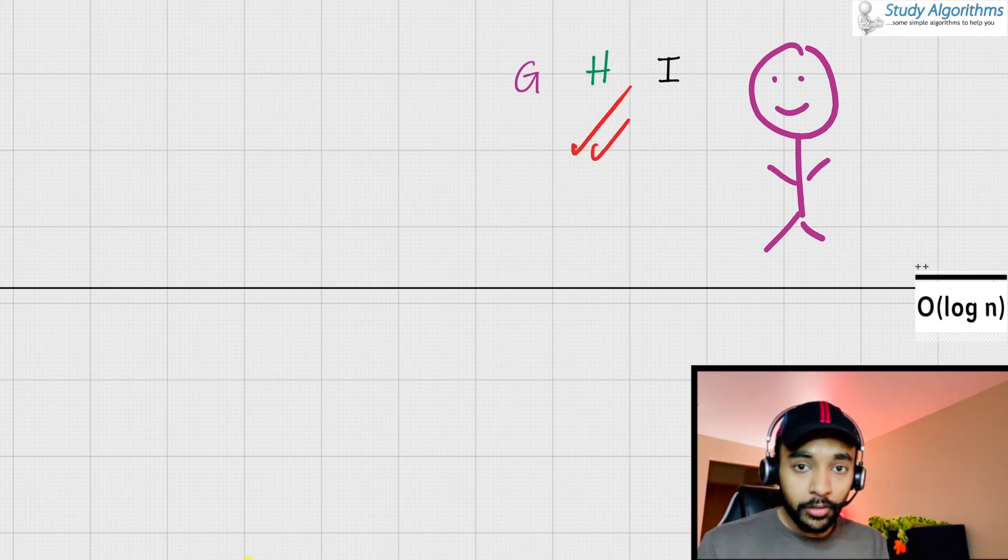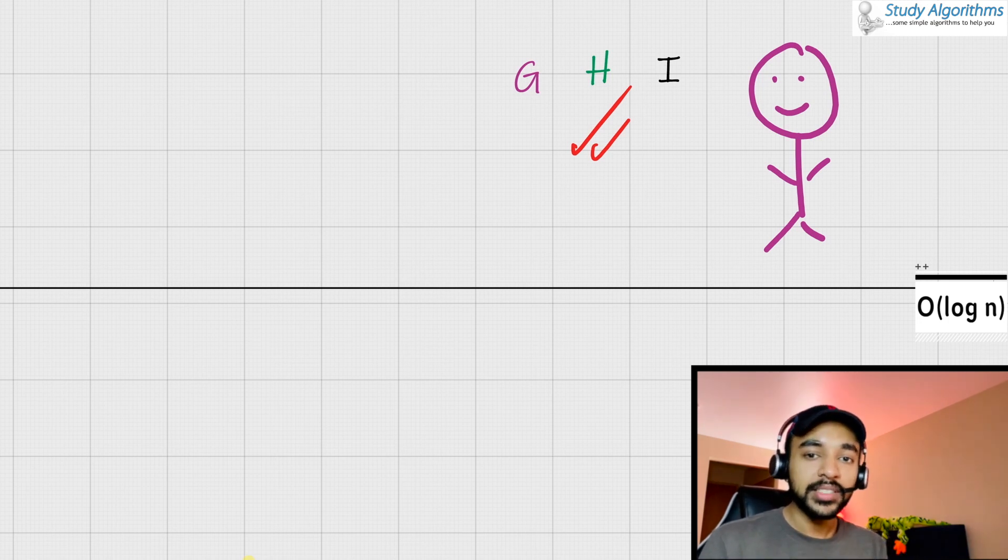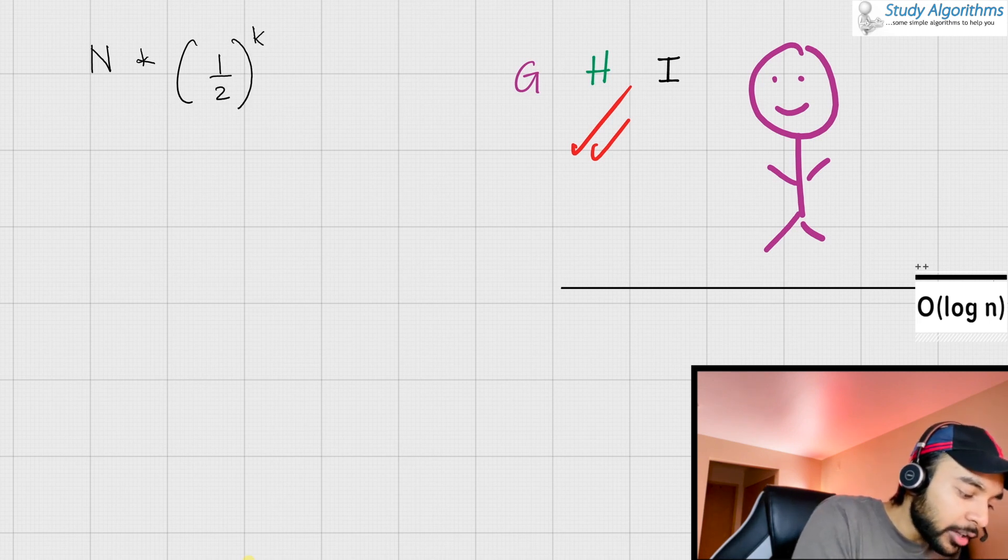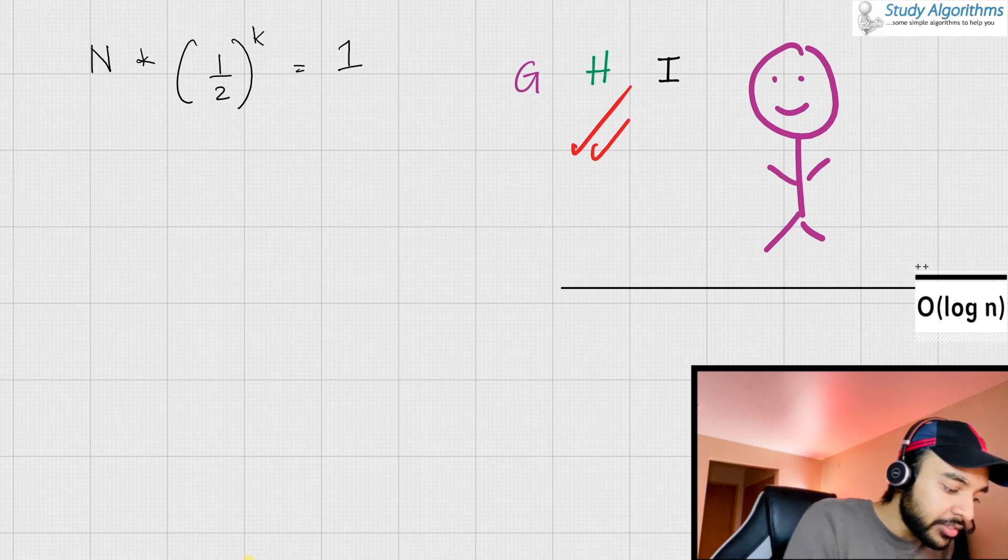So, what we were doing over here is we were splitting the sample space into half at each of the iteration. So, given a sample space of N and you half the sample space at each iteration and after K total iterations, you were able to achieve the answer.